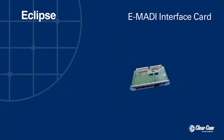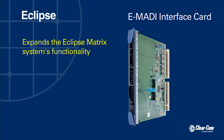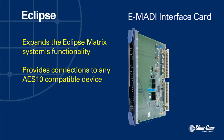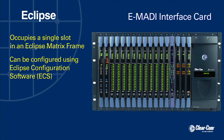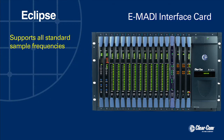The ClearCom E-MATI interface card expands the functionality of the Eclipse Matrix system by providing connections to any AES-10 compatible device. Occupying a single matrix slot, the E-MATI card can be configured through the Eclipse configuration software for 32, 56, or 64 bidirectional channels, allowing the matrix port usage to be optimized for any quantity of channels used.